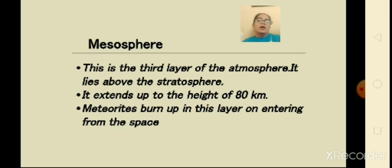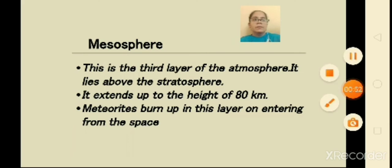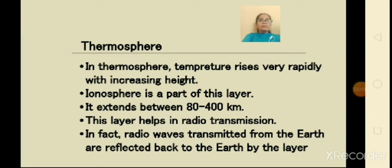Above stratosphere comes the mesosphere, the third layer of the atmosphere. It lies above the stratosphere and extends to a height of 80 kilometers. Meteorites burn up in this layer on entering from space. Above mesosphere comes the fourth layer, the thermosphere. In thermosphere, temperature rises very rapidly with increasing height. Ionosphere is a part of this layer, so thermosphere is also known as ionosphere. It extends between 80 to 400 kilometers and helps in radio transmission. Radio waves transmitted from the earth are reflected back to the earth by the thermosphere.